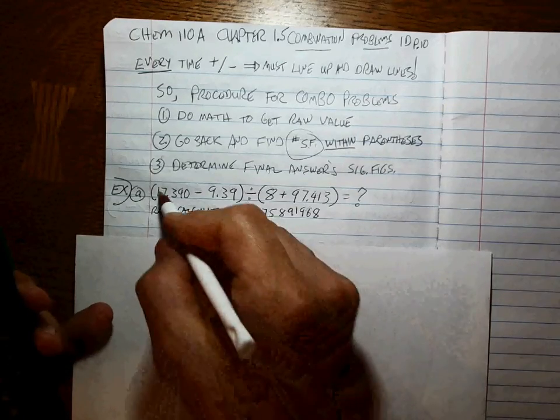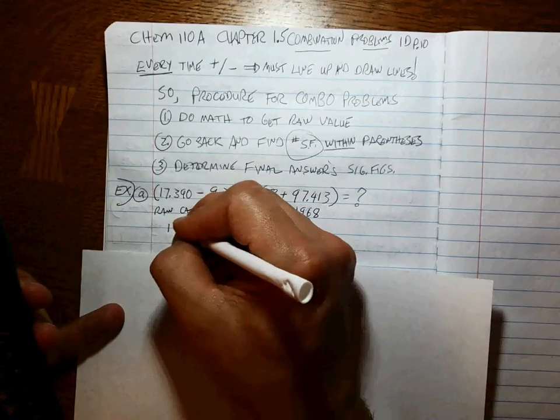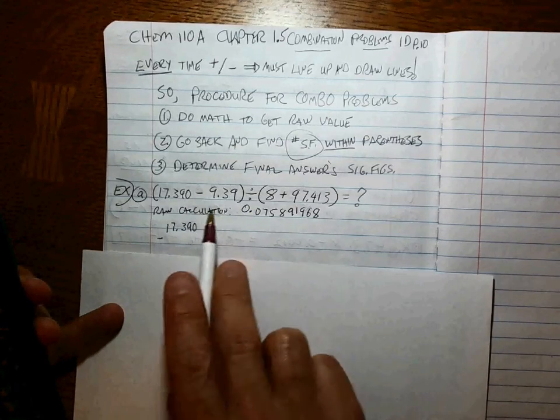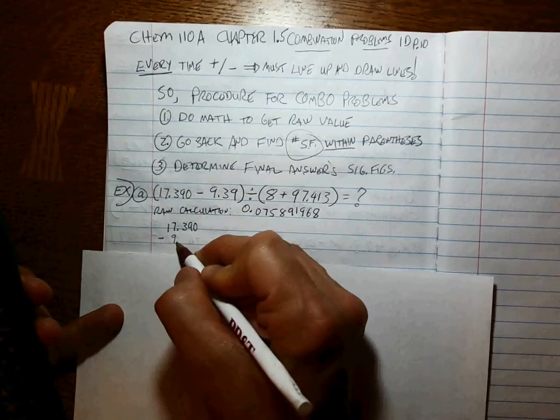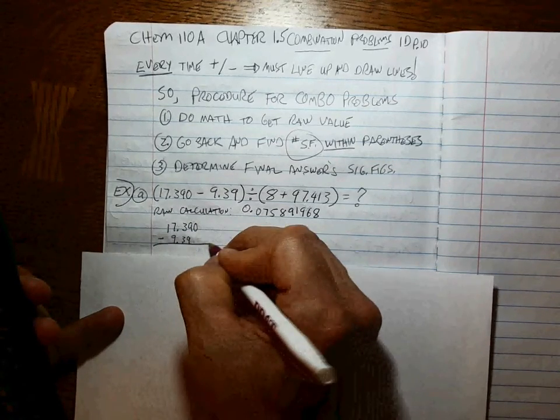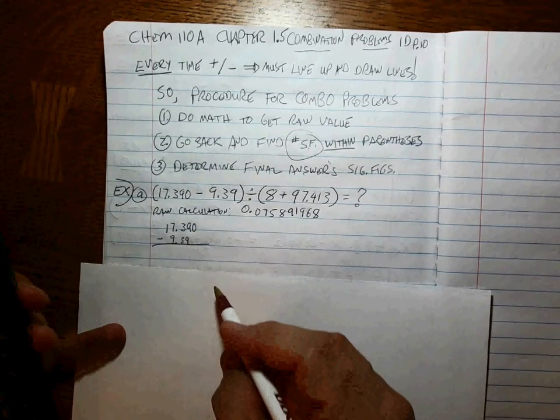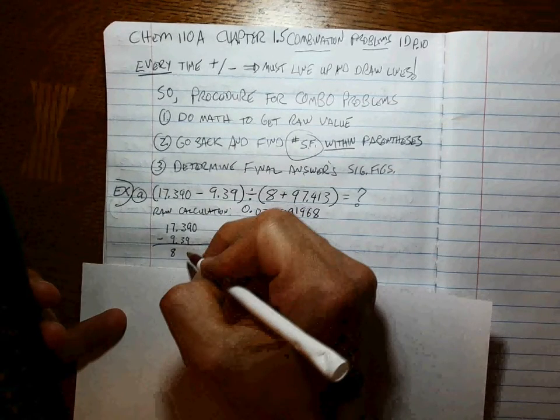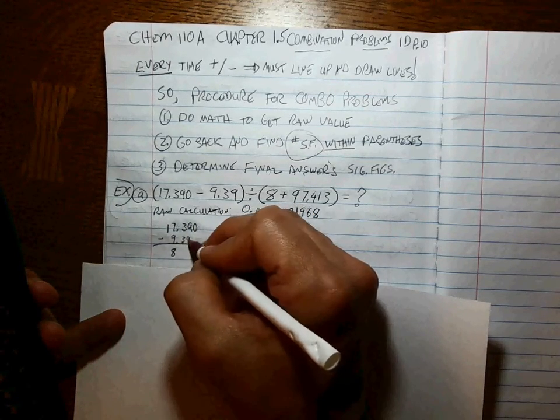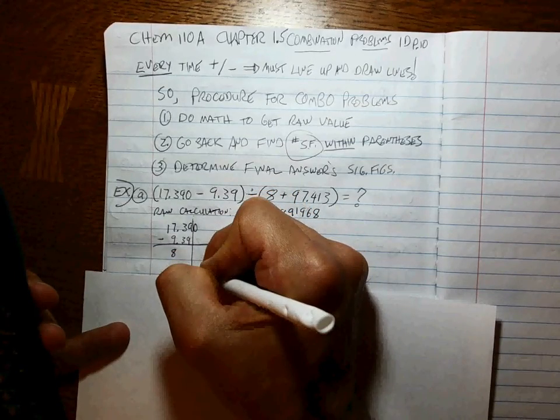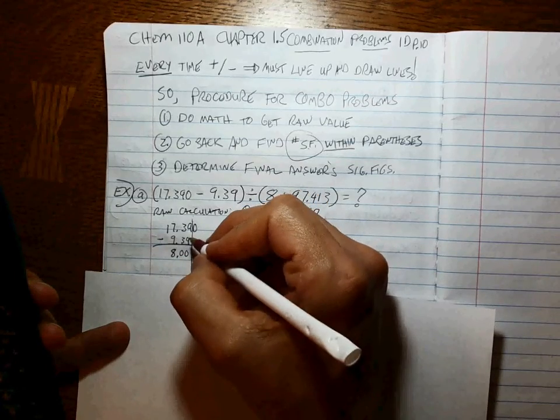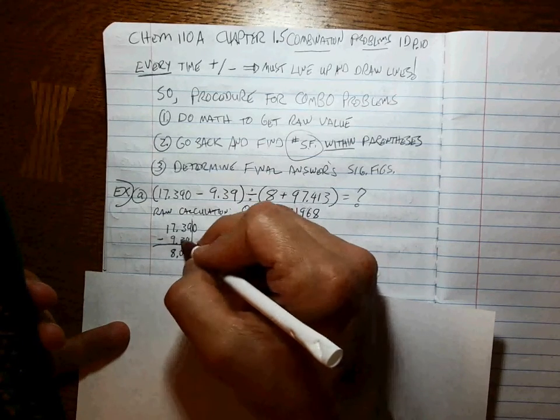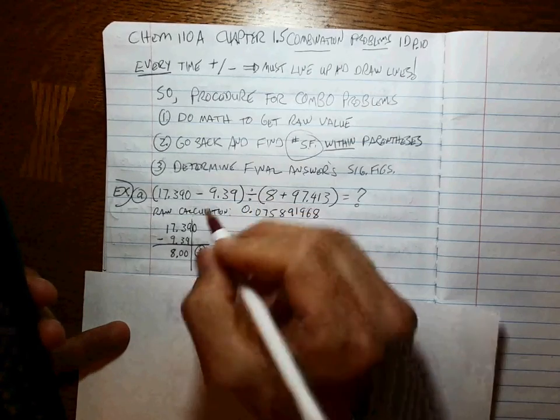So now you have to try to decide how many sig figs are actually in your answer. Well, how do we go about doing that? Well, go back to the problem and figure out how many sig figs are in each of these individual calculations within the parentheses. And remember, every time you have an addition subtraction, you have to line up the decimal places and draw the line to the least number of places past the decimal point. You punch that, minus that, in the calculator, and this is what you'll get. And that's all you'll get. But you have to know more. You have to know that this number is three places past. This number is two places past. This is telling you that the answer has to be two places past the decimal point because this is three places and two past. So the least is two past or three sig figs in this part.